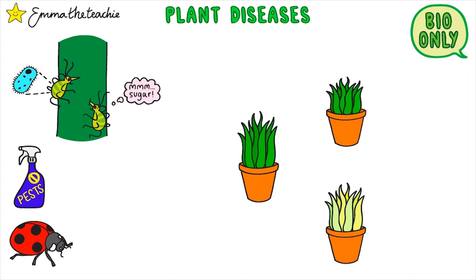Earlier in the infection and response topic, you learned about plant diseases including TMV and rose black spot. Viral, bacterial, and fungal pathogens can infect plants, but there are other ways that plants can be damaged.